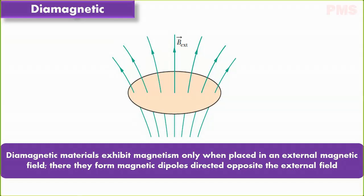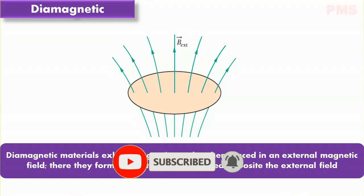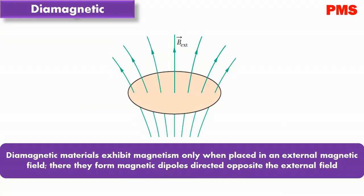A diamagnetic material placed in an external magnetic field B develops a magnetic dipole moment directed opposite to the external magnetic field. If the field is non-uniform, the diamagnetic material is repelled from a region of greater magnetic field toward a region of lesser field.